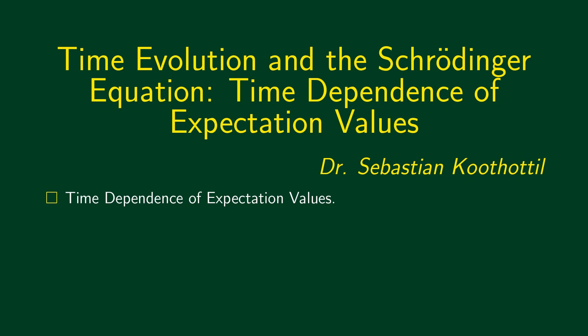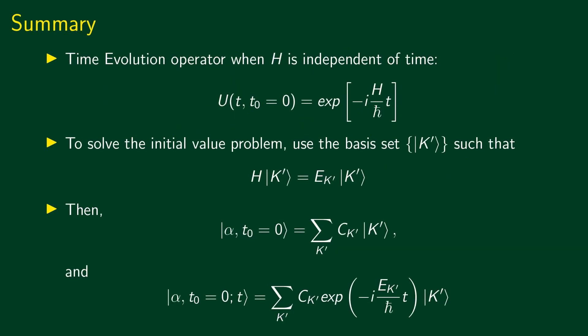Let's now discuss the time dependence of expectation values. Here is what we have learned so far. The time evolution operator, when the Hamiltonian is independent of time, has the form U of t, t0 equal to 0, which is equal to exponential minus i H t divided by h-bar.